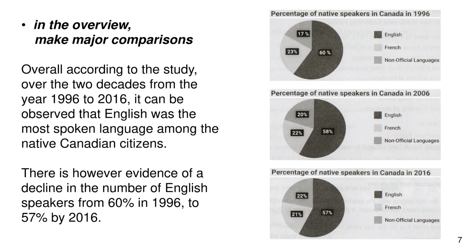Now in the overview, make major comparisons. Overall, according to the study, over the two decades from 1996 to 2016, it can be observed that English was the most spoken language among Canadian native citizens. There is, however, evidence of a decline in the number of English speakers, from 60% in 1996 to 57% by 2016.